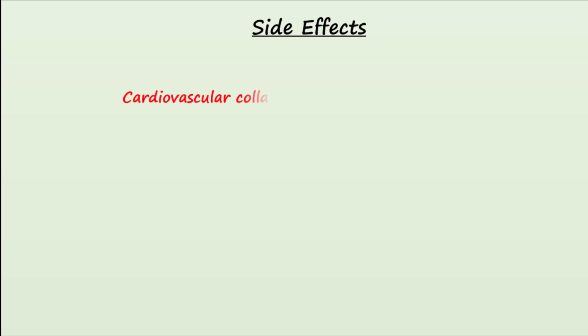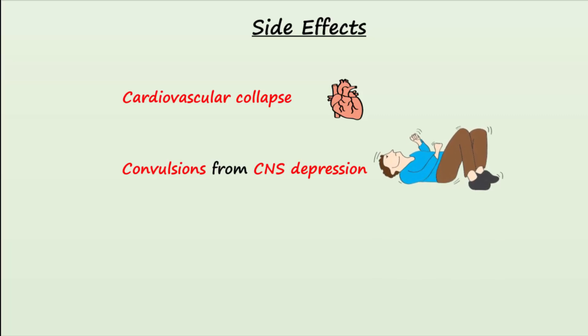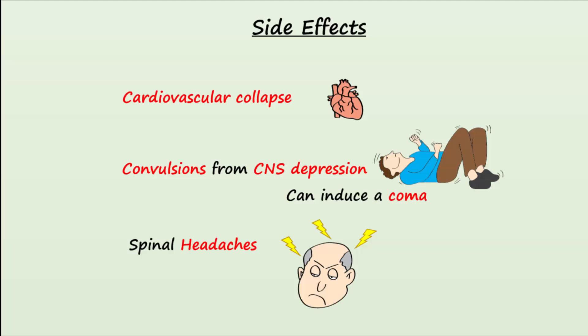Side effects of local anesthetics may occur when significant amounts enter systemic circulation. These may include cardiovascular collapse when the anesthetic affects the heart, and convulsions as a result of CNS depression, which can induce a coma in some cases. Individuals sometimes get spinal headaches as a result of treatment; lying down flat can help prevent them. If a spinal headache does occur, a small amount of blood can be injected into the epidural space near the original injection site — this is called an epidural blood patch.